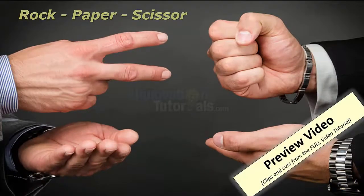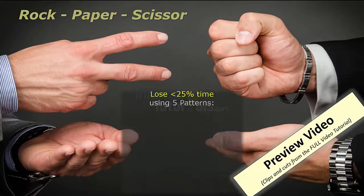You can either win, you can lose, or you can tie. But you can actually increase your odds tremendously because there are actually patterns in this game. Here are five patterns that you can actually use next time you do rock, paper, scissors.